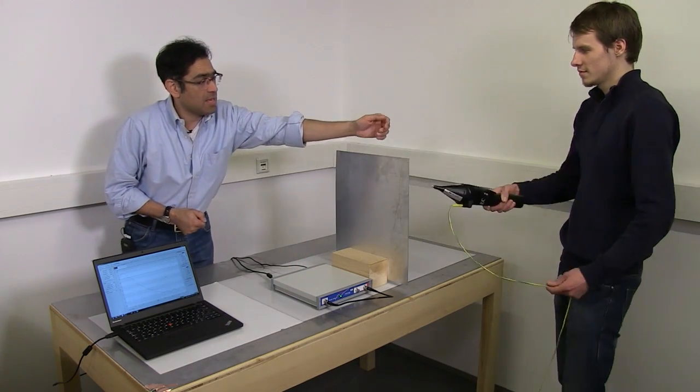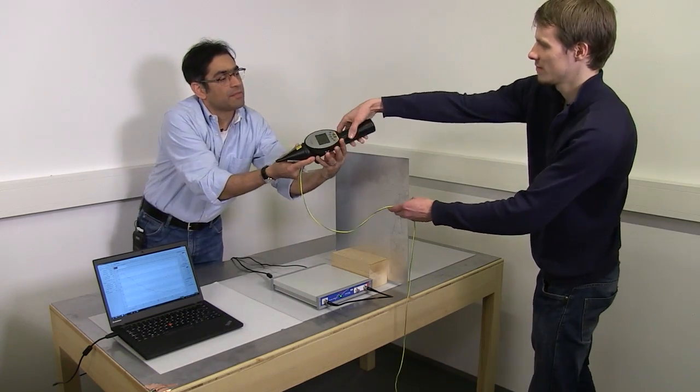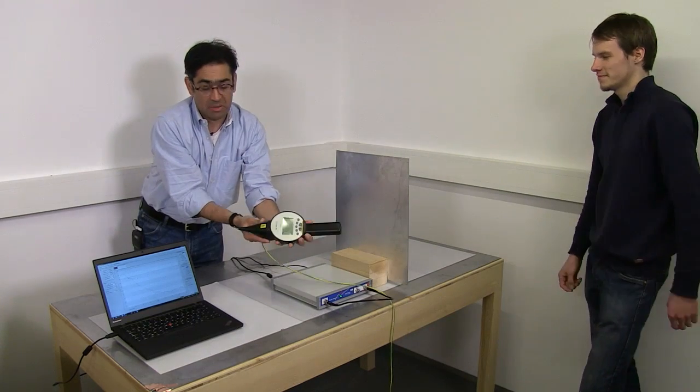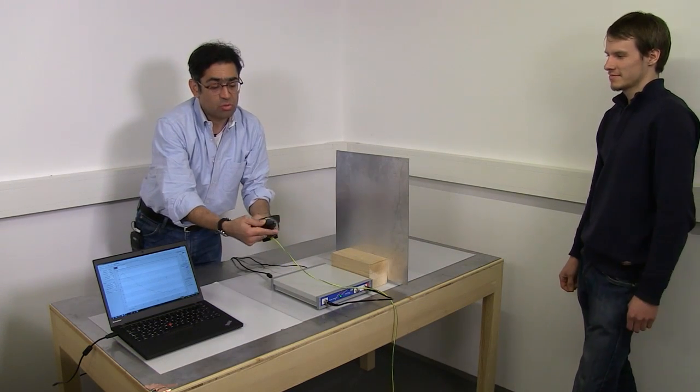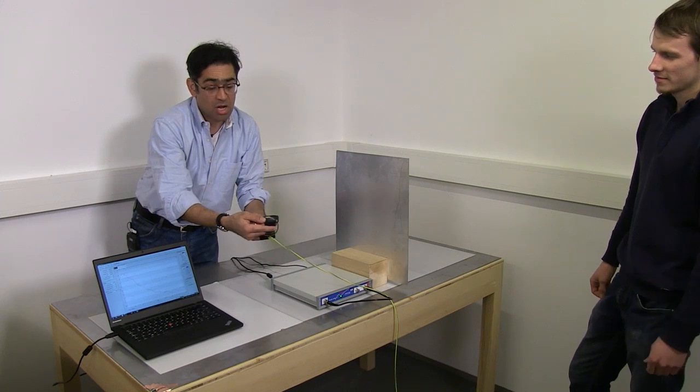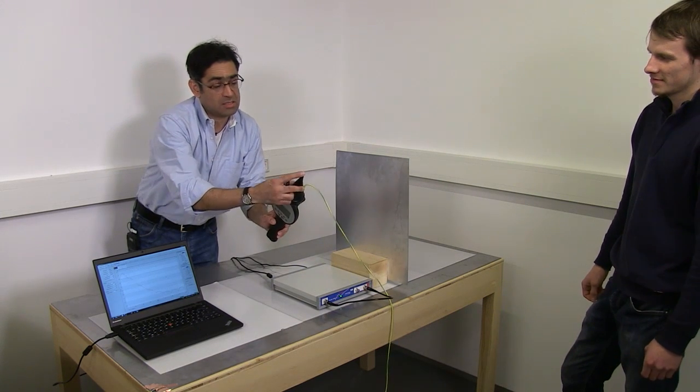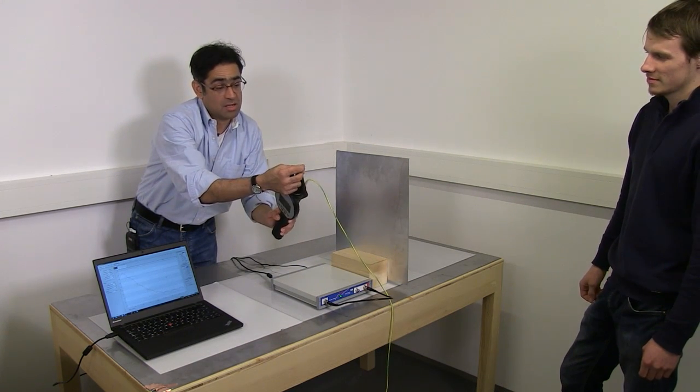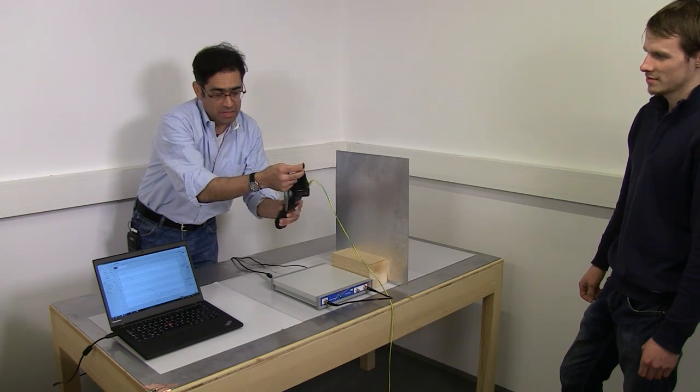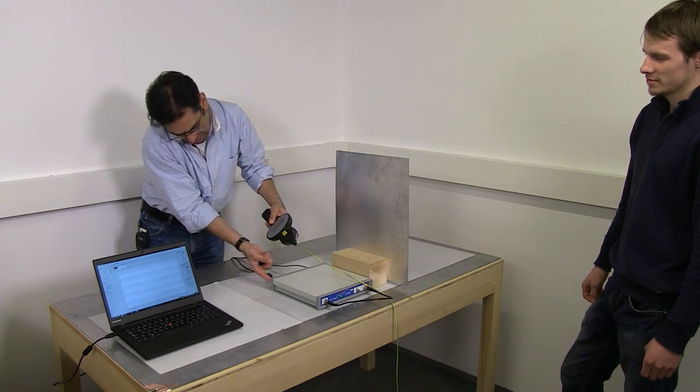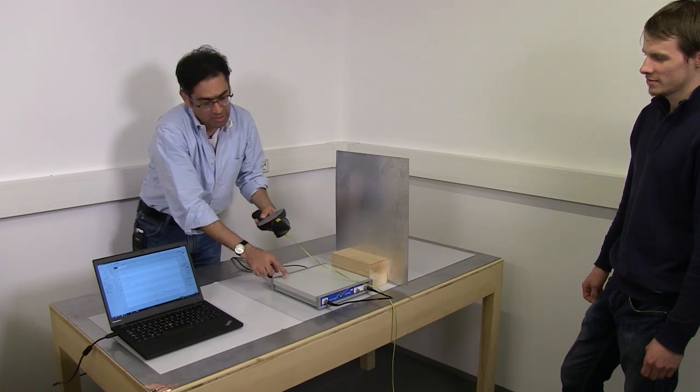And then you have an ESD simulator, thank you, which looks typically something like this. And you can do two types of ESD discharge. One is a conducted discharge which has got this pointy tip of the ESD simulator. You touch perhaps a screw of the equipment on the test.